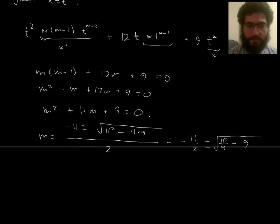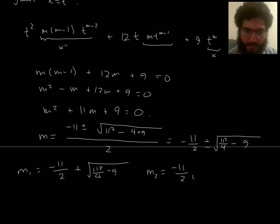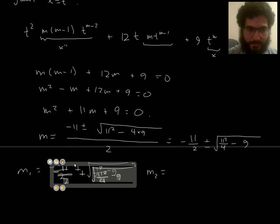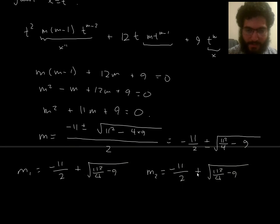So let me just call one of the roots m1 and the other one m2. So I've got m1 equals this, and m2 equals that. And then my general solution is going to be c1, t to the m1, plus c2, t to the m2.